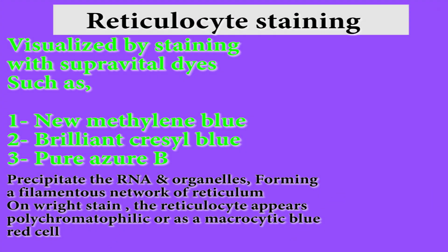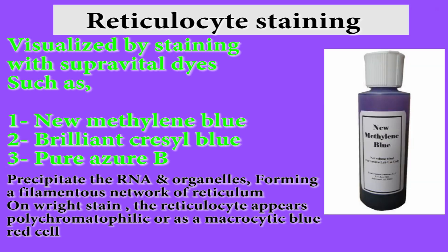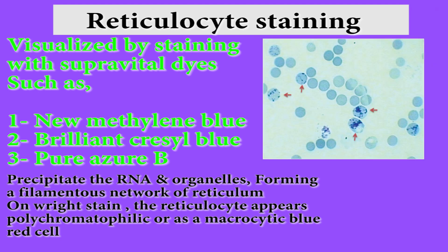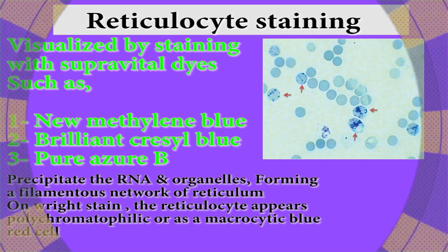Reticulocyte staining is visualized by staining with supravital dyes such as new methylene blue, brilliant cresyl blue, and pure azure B, which precipitate RNA and organelles, forming a filamentous network of reticulum on bright stain. The reticulocyte appear polychromatophilic or as a macrocytic blue-red cell.